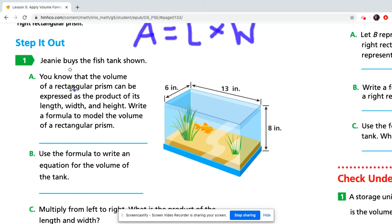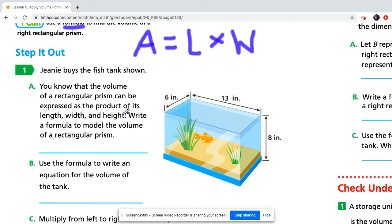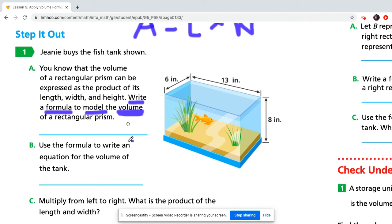Now we're going to go to Jeannie buys the fish tank, shown on page 113, number 1. You know that the volume of a rectangular prism can be expressed as the product. The product we know is the answer to a multiplication problem. So it's saying that you know the volume of a rectangular prism can be expressed as a product, which is true. Just like how area is the answer of a multiplication problem. And volume is the answer to a multiplication problem based on its length, width, and height. It wants you to write a formula to model the volume of a rectangular prism. So write the formula that we would need to find volume. What is the formula that we need to find volume? We've been working on it this whole module.